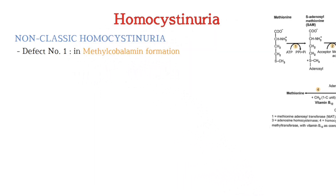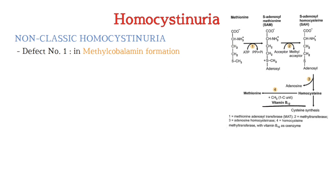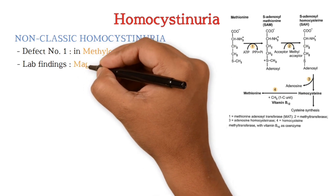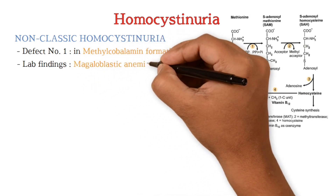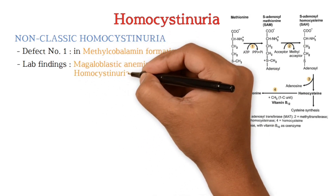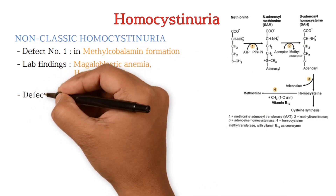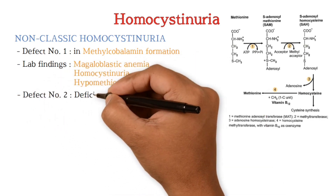Now we discuss non-classical homocystinuria. Defect number one is in methylcobalamin formation. Methylcobalamin is a cofactor for the enzyme methionine synthase, so homocysteine cannot be remethylated to methionine. Homocysteine accumulates and methionine levels decrease. Lab findings include megaloblastic anemia, homocystinuria, and hypomethioninemia.